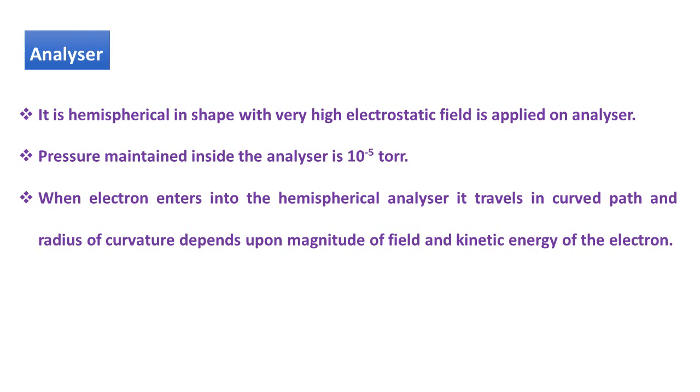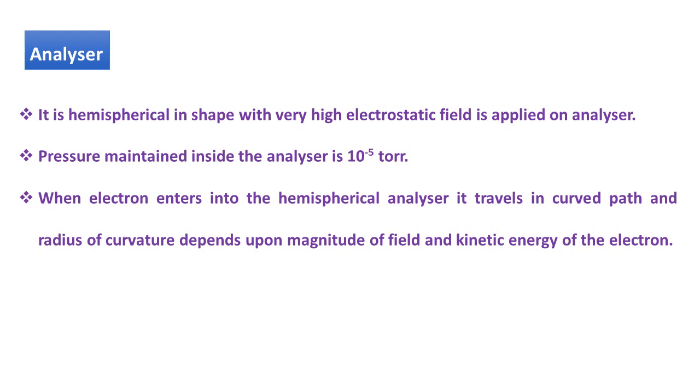Third is analyzer. Analyzer is hemispherical in shape with very high electric field applied on the analyzer. The pressure inside the analyzer is 10 to the minus 5 torr. When electron enters into the hemispherical analyzer, it travels in curved path and radius of curvature depends upon the magnitude of field and kinetic energy of electron.